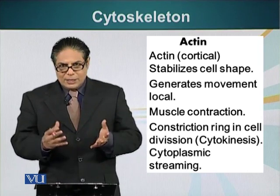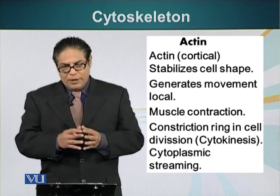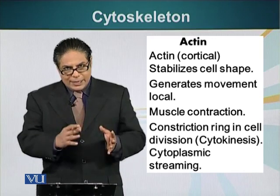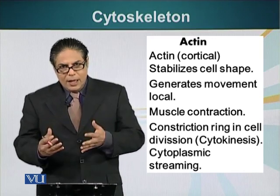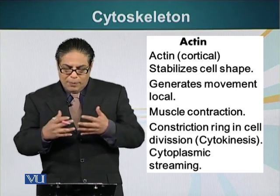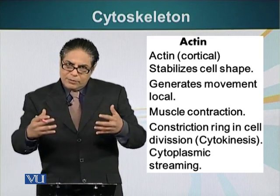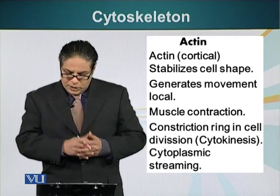Muscle contraction is another key role of actin. As we know, muscle is made up of two different types of fibers: actin and myosin. Actin is the cytoskeletal element along which myosin fibers glide, resulting in muscular contraction.